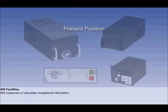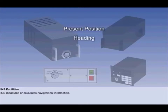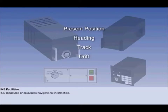INS measures or calculates the following navigational information: present position (latitude and longitude), heading (which way the aircraft is pointing), track (the direction of the aircraft's path over the ground). The difference between heading and track is called drift, caused by crosswind. Ground speed is the speed over the ground, which is usually not the same as the speed through the air — again, this is the effect of wind.